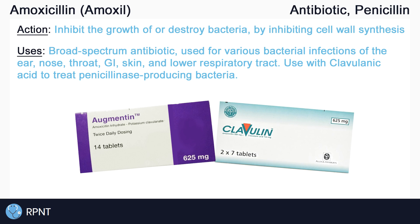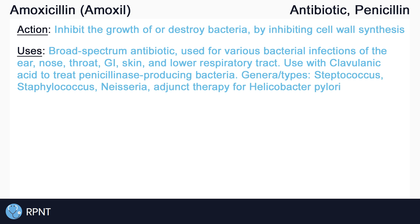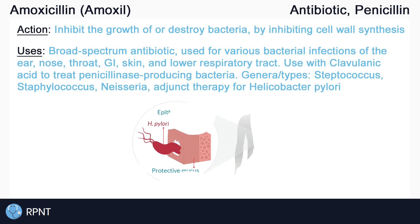Examples of genera or types of bacteria that amoxicillin can treat include Streptococcus, Staphylococcus, Neisseria, and more. Amoxicillin in combination with clarithromycin, another antibiotic, and omeprazole, a proton pump inhibitor, can also be used to treat the bacteria Helicobacter pylori, or H. pylori.